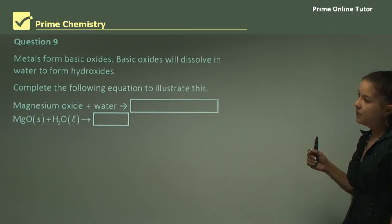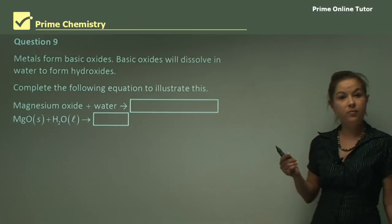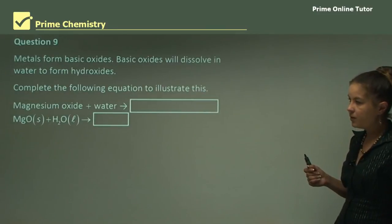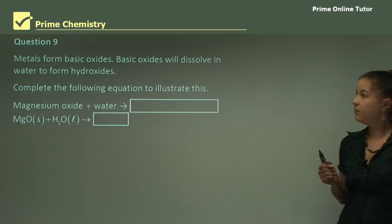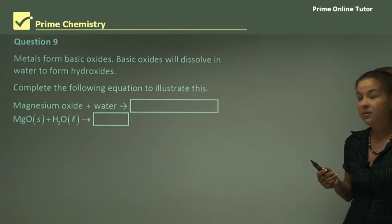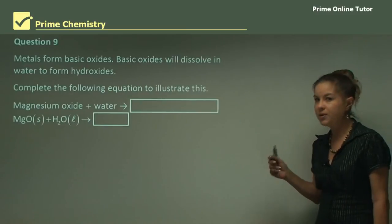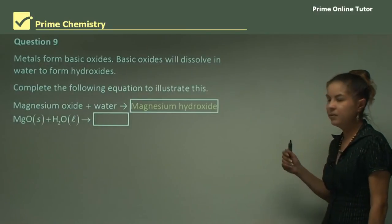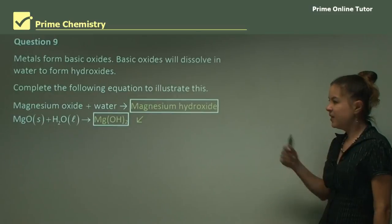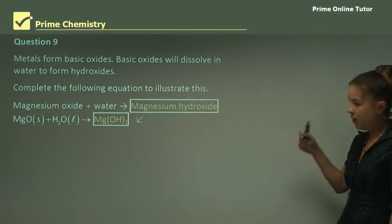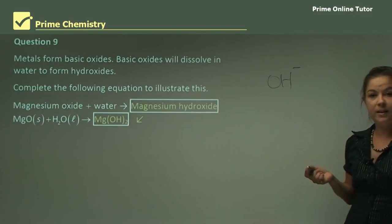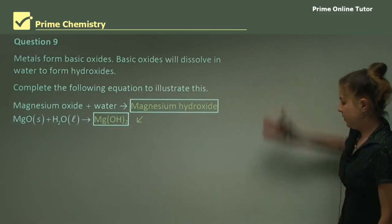Question 9: Metals form basic oxides. Basic oxides will dissolve in water to form hydroxides. Complete the following equation to illustrate this: magnesium oxide and water forms what? Luckily in the question, it's given us half the answer. It says it will dissolve to form hydroxides. So we need to draw a hydroxide of magnesium. Magnesium hydroxide will form, and the formula is Mg(OH)2, so two hydroxyl groups bonding to a magnesium. That is question nine.